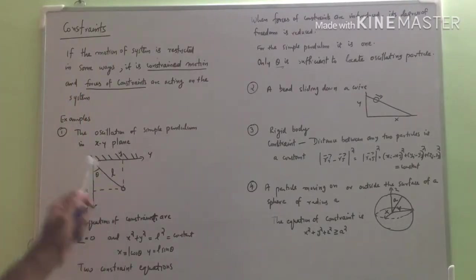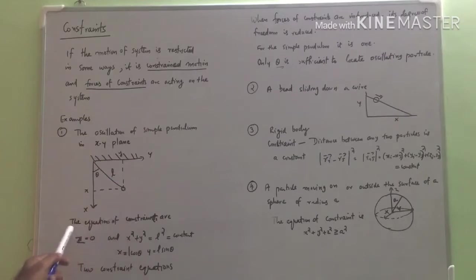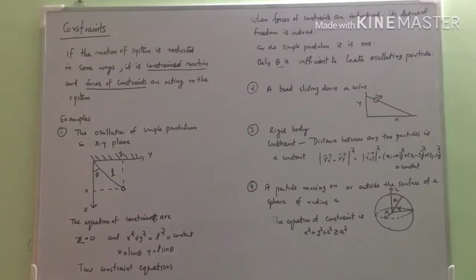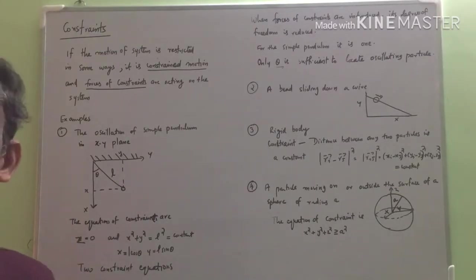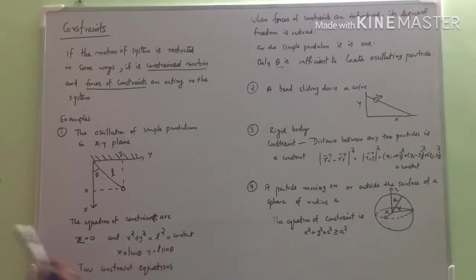Consider a simple pendulum. The simple pendulum is moving in the xy plane — this is the x axis, y axis. The simple pendulum is oscillating in the xy plane. We say constraints are acting on the simple pendulum. One is z equal to 0, since the bob of the simple pendulum is constrained to move in the xy plane. So this is a constraint.